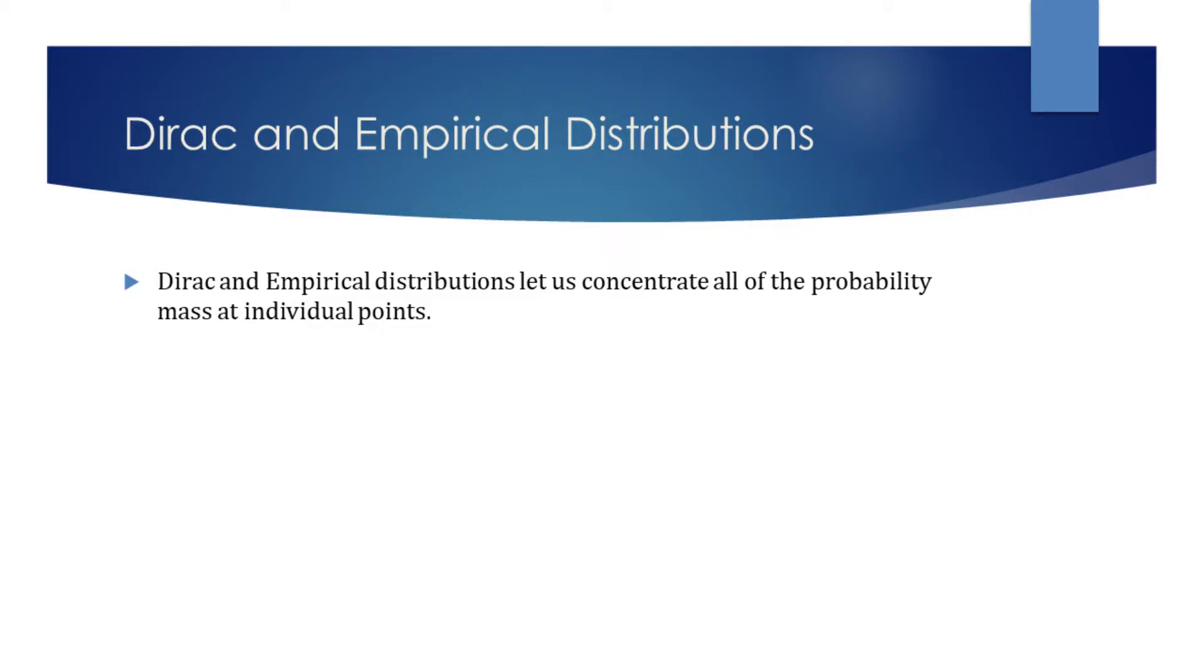Dirac and empirical distributions let us concentrate all of the probability mass at individual points. We will now consider them in more detail.